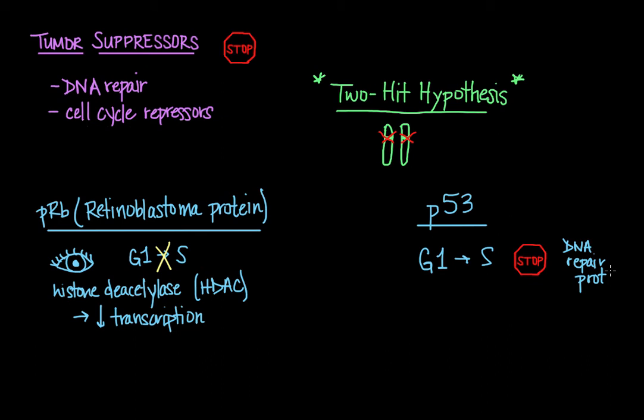So specifically, P53 binds DNA and activates several genes, including ones that code for a protein called P21, which binds the cyclin CDK, or cyclin-dependent kinase complex, which is actually the complex responsible for pushing the cell from the G1 to S phase in the cell cycle.